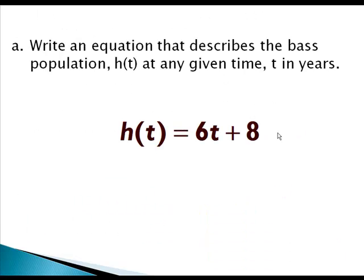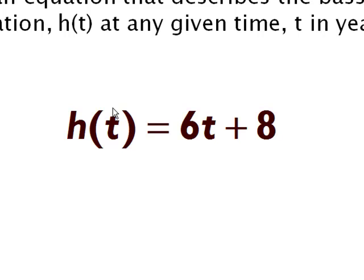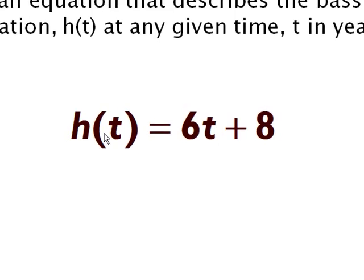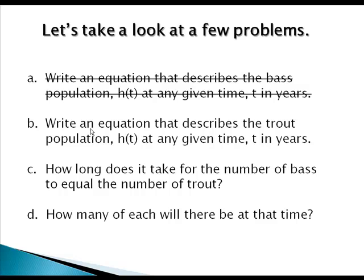So the population is really dependent on how much time goes by. Our equation should look something like this: here's my output, population; here's my input, time. As time gets bigger the population will get bigger. So we've answered part A.